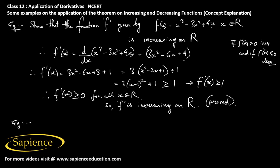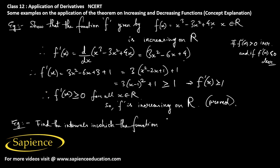The second example: find the intervals in which the function f given by f(x) = 4x³ - 6x² - 72x + 30 is increasing or decreasing. We have f'(x) = 12x² - 12x - 72.